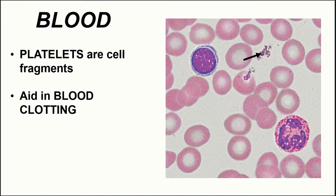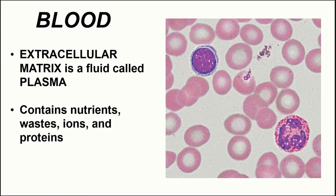These little pieces are not actually cells but cell fragments called platelets. Platelets are really important in blood clotting — they are little cell fragments that form plugs in blood vessels to facilitate the clotting process and stop blood loss.